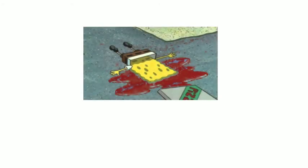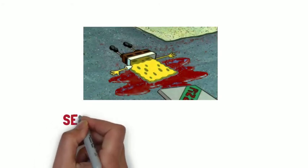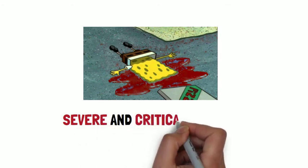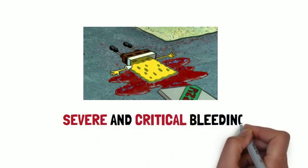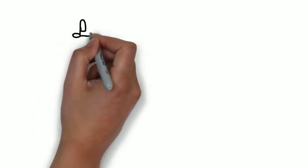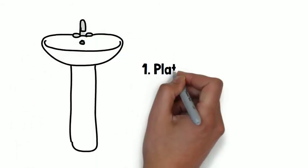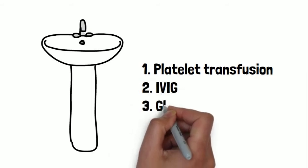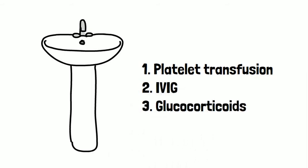Now let's talk about severe and critical bleeding. Critical bleeding means bleeding into a critical anatomical site such as the brain or spinal cord, or bleeding that causes hemodynamic instability or respiratory compromise. Severe bleeding implies a drop of hemoglobin more than 2 g/dL or requiring transfusion of two or more units of packed RBCs. In such cases, a kitchen sink approach is used — platelet transfusions, IVIG, and glucocorticoids are used all at once. However, RCTs are lacking and use of these treatments is supported only by small observational studies.